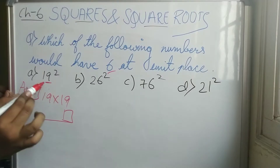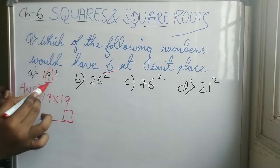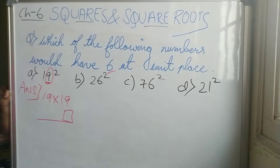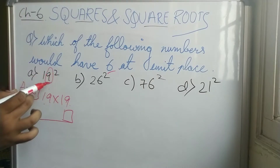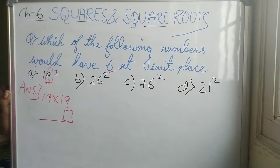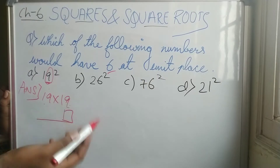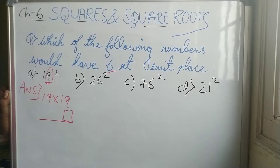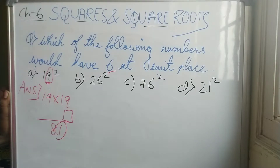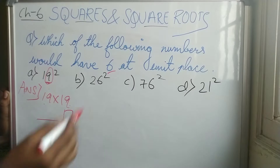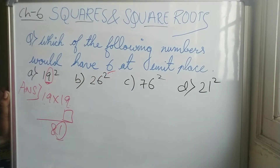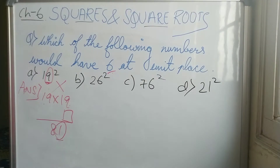You have to check the last digit of the question. For 19 squared, that means 19 into 19 — the last digit is 9. So 9 into 9 equals 81. The unit digit of 81 is 1, not 6. That means 19 squared will not end with 6 at the unit place.